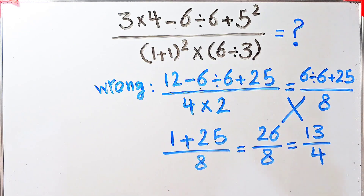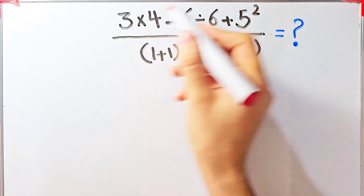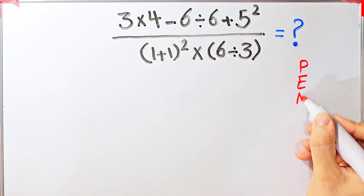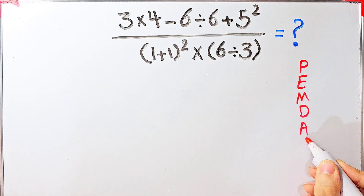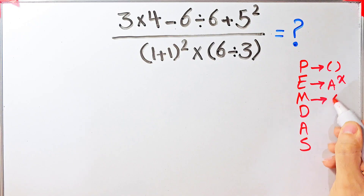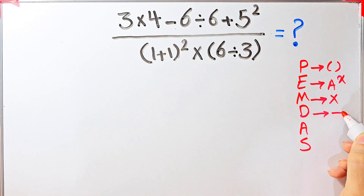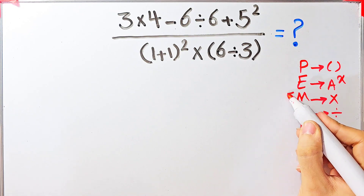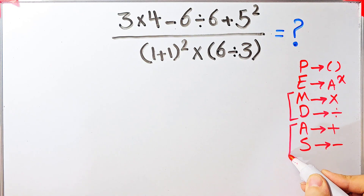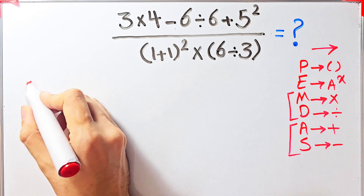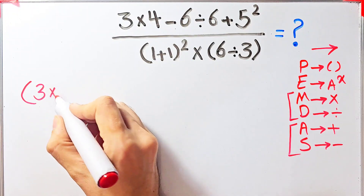Let's solve this question step by step together. To solve it, we need to follow the order of operations, which is PEMDAS. PEMDAS shows the priority of mathematical operations — if you don't pay attention to this rule you get the wrong answer. P stands for parentheses, E for exponent, M for multiplication, D for division, A for addition, and S for subtraction. Multiplication and division have the same level of priority, as do addition and subtraction. When we have both in an expression, we start from the left.